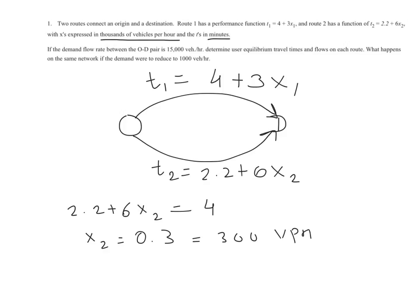So anytime the demand exceeds 300 VPH, that means both routes are going to be used. Anytime the demand is less than 300 VPH per hour, the problem for you will become rather simple because you can say, at less than 300 VPH per hour, everybody will just take route 2, and the demand on route 1 will be 0.